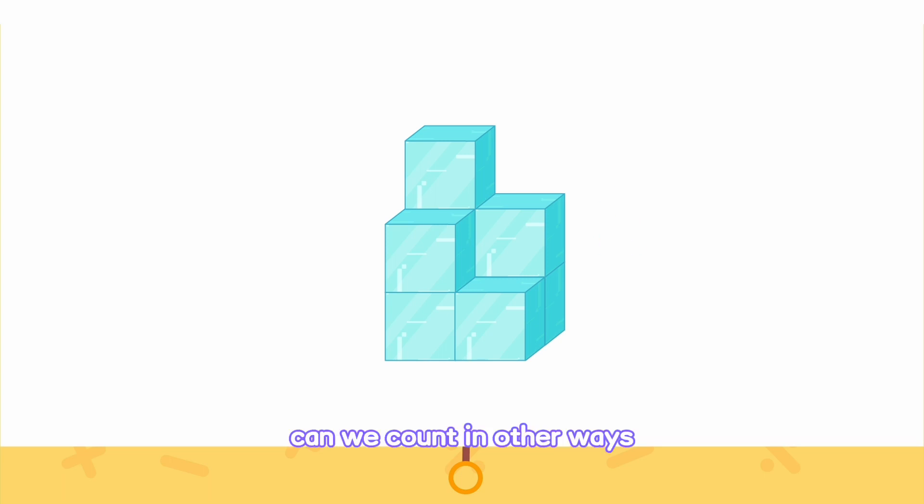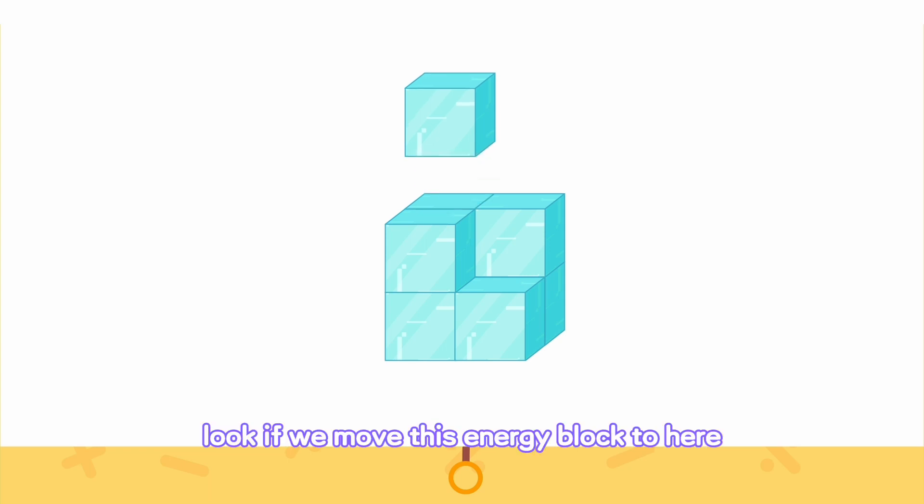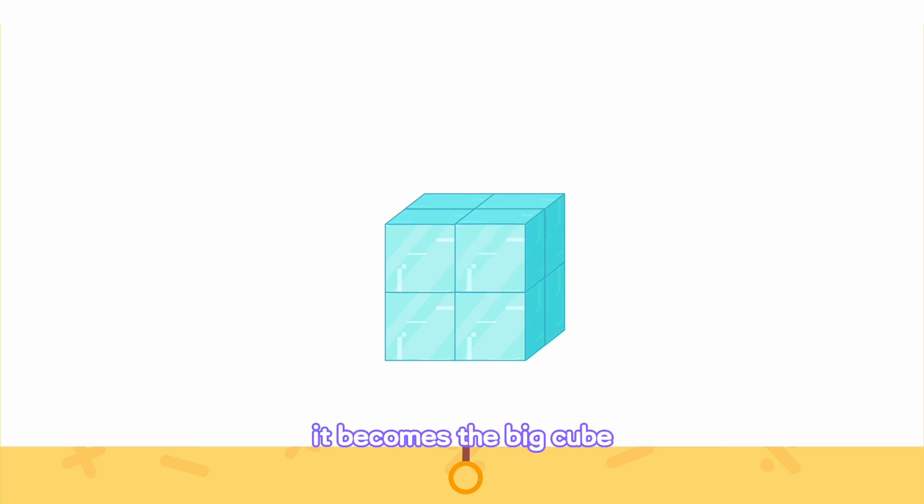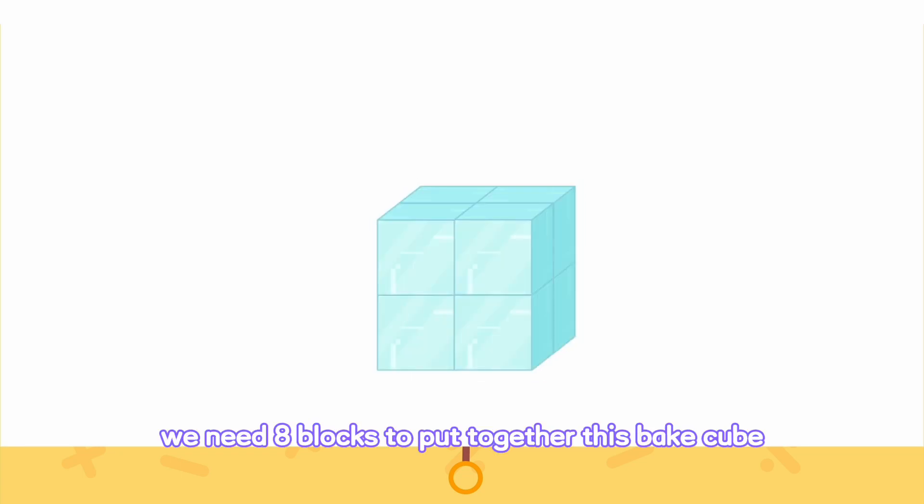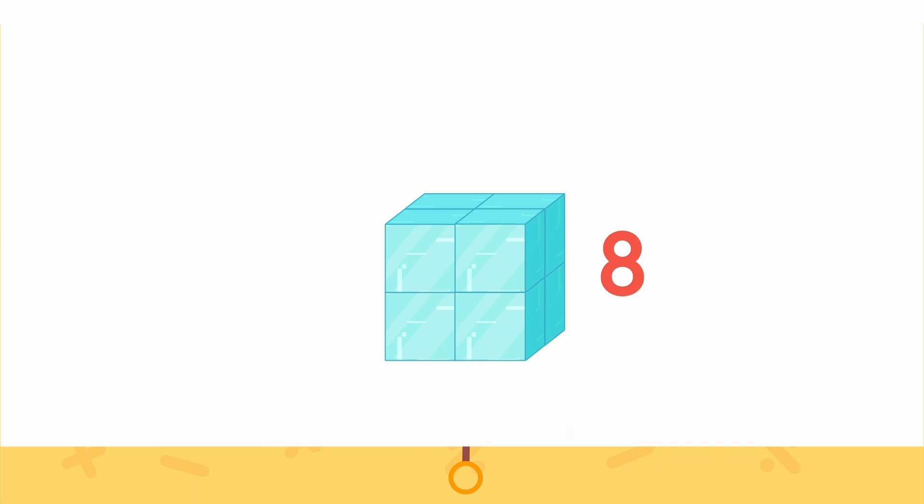Can we count in other ways? Let's review a model we've seen before! Look! If we move this energy block to here, it becomes the big cube! We need eight blocks to put together this big cube! So there are eight energy blocks!